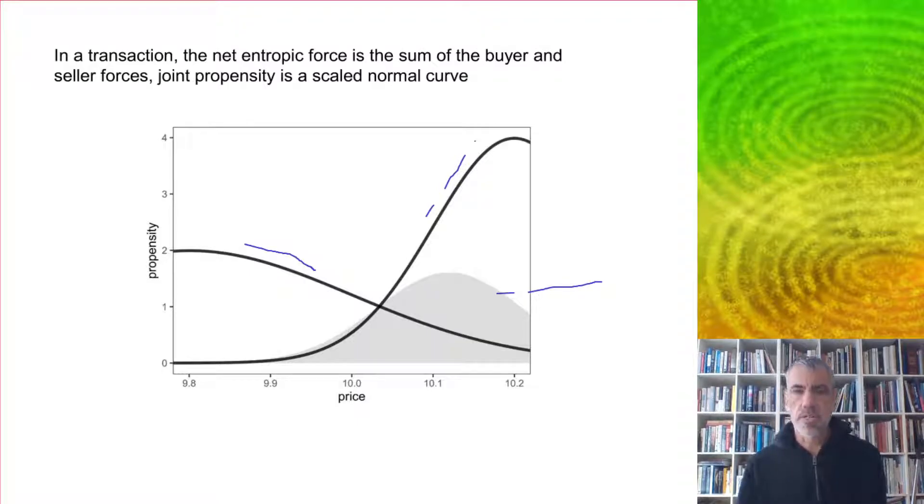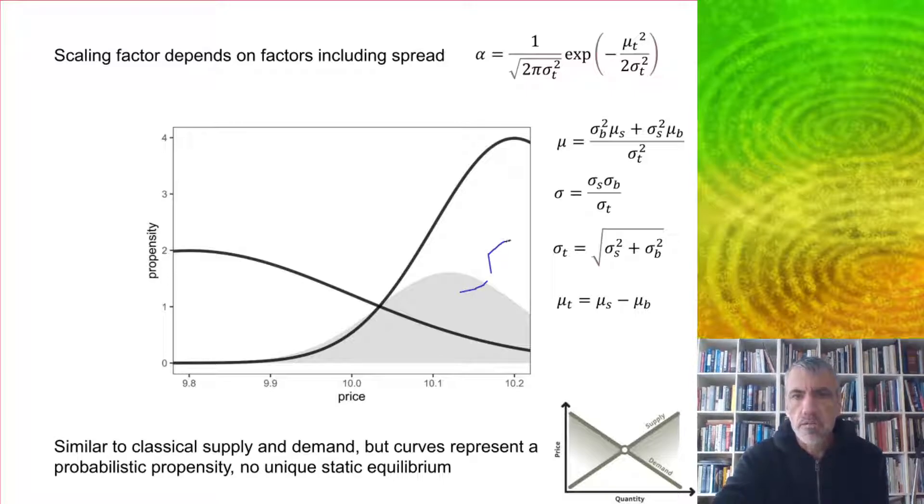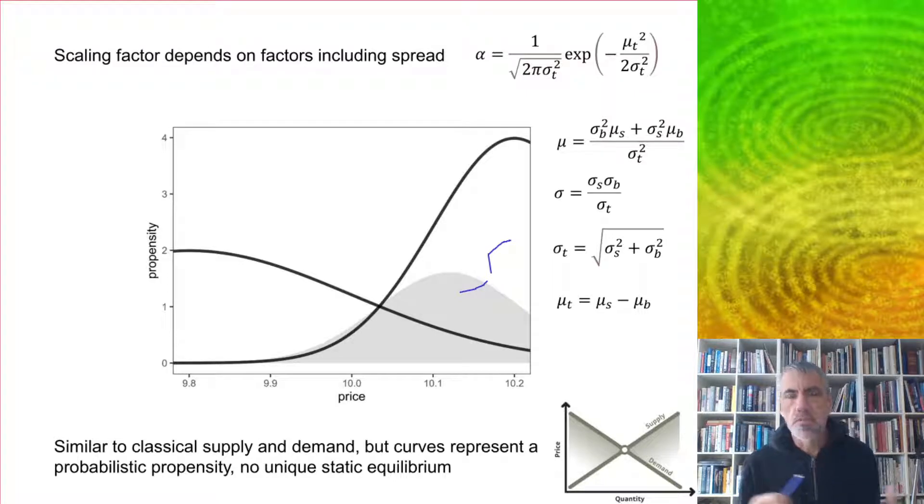The net entropic force associated with this is just the sum of the buyer and seller forces. This is a very intuitive way of understanding buying and selling transactions. The buyer has a force pulling down towards a lower price, the seller is trying to pull it up to a higher price, and you get this probabilistic result. The probability of transacting will scale depending on a number of factors, including the spread, the distance between the buyer and the seller's optimal prices. If there's a big gap between them, then the probability of a transaction occurring will be lower.